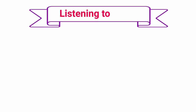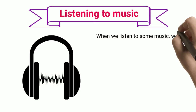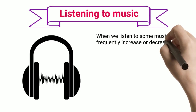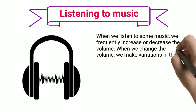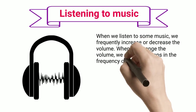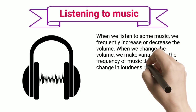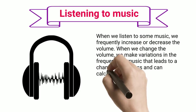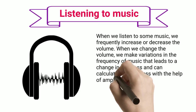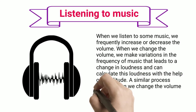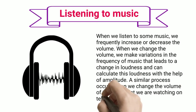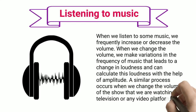Listening to Music: When we listen to some music, we frequently increase or decrease the volume. When we change the volume, we make variations in the frequency of music that leads to a change in loudness, and we can calculate this loudness with the help of amplitude. A similar process occurs when we change the volume of a show we are watching on television or any video platform.